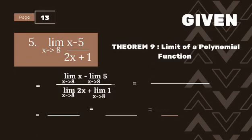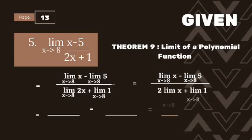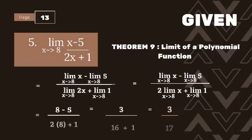In the denominator we have 2x, so we separate it further: the limit of x as x approaches 8, minus the limit of 5 as x approaches 8, over 2 times the limit of x as x approaches 8, plus the limit of 1 as x approaches 8. Simplifying: 8 minus 5 over 2 times 8 plus 1 gives us 3 over 17.